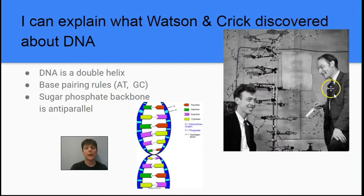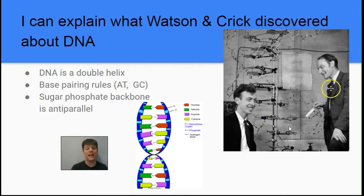Our next learning target is to explain what Watson and Crick discovered about DNA. This is an image of James Watson and Francis Crick with their model of DNA. They discovered the famous double helix structure — it looks like a rope ladder being twisted as it comes down. They applied Chargaff's rules to understand that adenine and thymine always pair together and that cytosine and guanine always pair together.